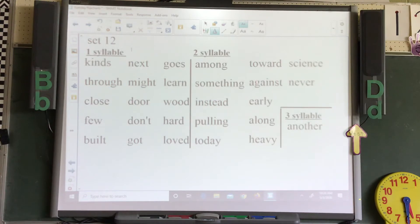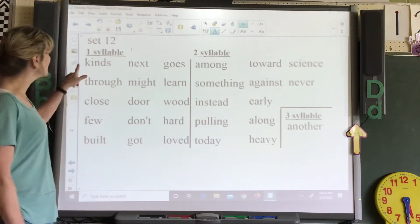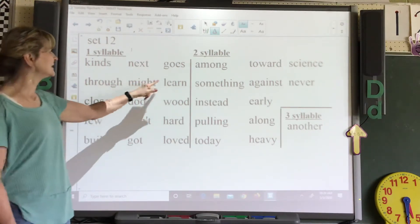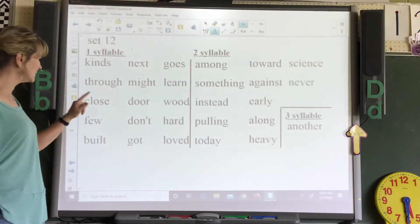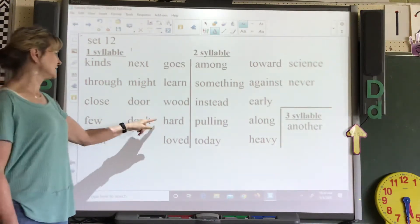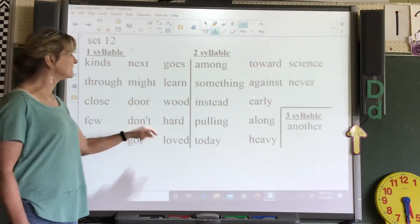Okay, our set 12 words. I divided them into words that are one syllable, two syllables, and three syllables. So the one-syllable words are: kinds, next, goes, through, might, learn, close, door, would, few, don't, hard, built, got, loved.